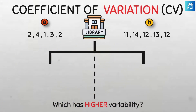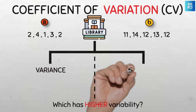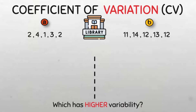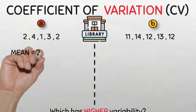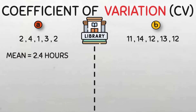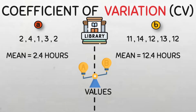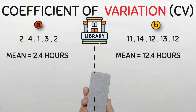To know the variability in the data, we can compute the variance or the standard deviation, because these are the two most common measures of variability. Let's start by looking at the average time they spent in the library — let's look at their means. The mean of group A is 2.4 hours, while that of B is 12.4 hours. It is clear that data set B has a much higher mean, 12.4 hours, compared to data set A, which has a mean of just 2.4 hours.